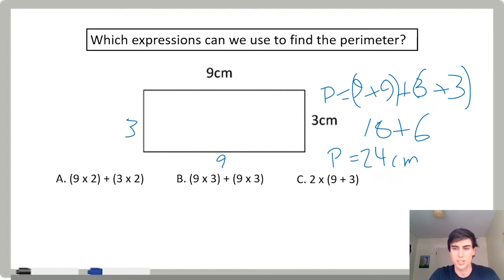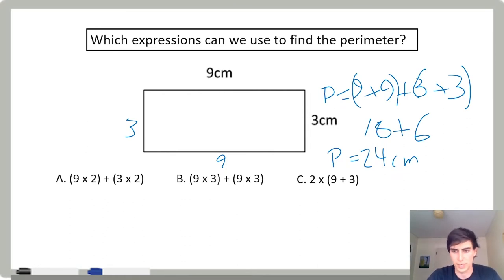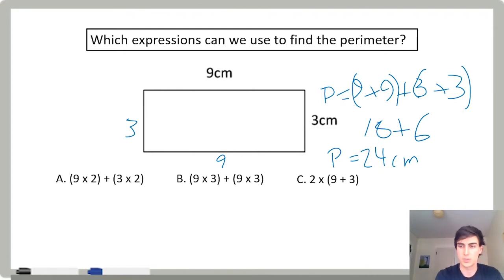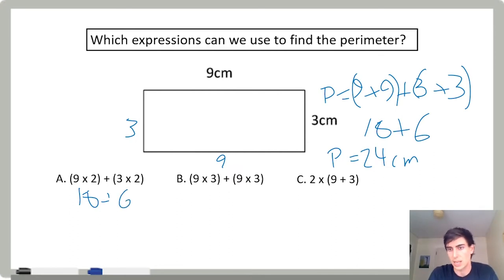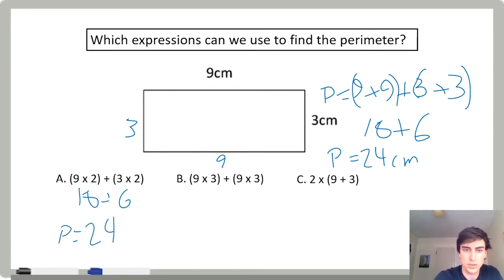Which expression can we also use to find the perimeter? Let's check this one: nine times two plus three times two. That kind of seems like Lee's strategy. Nine times two is 18, plus three times two is six. Just like with my strategy, 18 plus six — perimeter equals 24 centimeters.